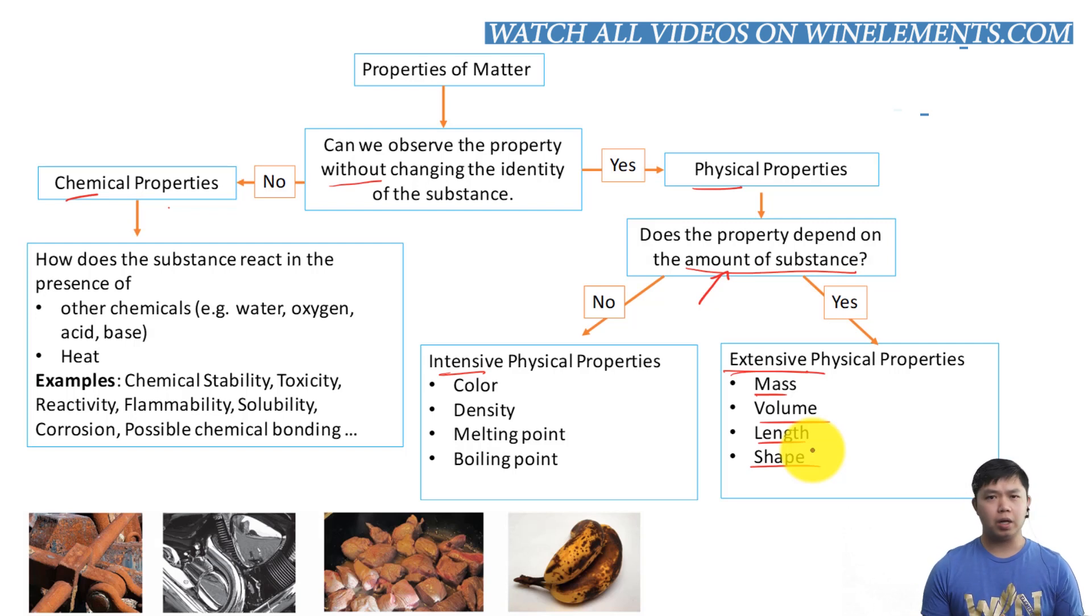And in terms of length, of course, it changes with the amount of the substance. Whereas intensive properties, it doesn't matter how much water you have, the water color doesn't change. The same thing with the density of water. It doesn't matter how much water you have. You can have an ocean or a lake of water. That density of water is still 1 gram per milliliter. And melting point and boiling point of water also stays the same.